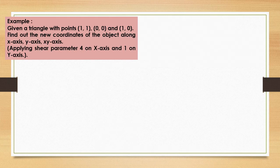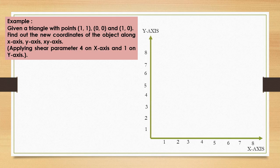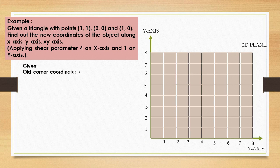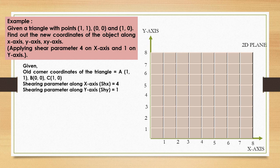We are solving an example: given a triangle with points A(1,1), B(0,0), C(1,0), we need to find the new coordinates along the X axis, Y axis, and XY axis. The shear parameter along the X axis (Sh_x) is 4 and along the Y axis (Sh_y) is 1. We need to plot these coordinate values on the 2D plane and find the solution for all corner coordinates of the triangle.